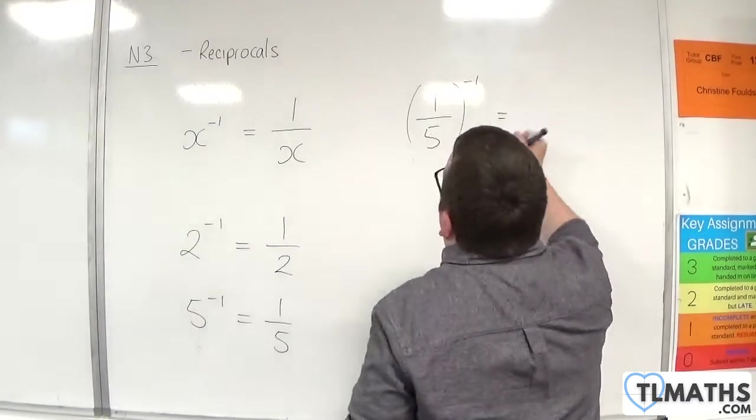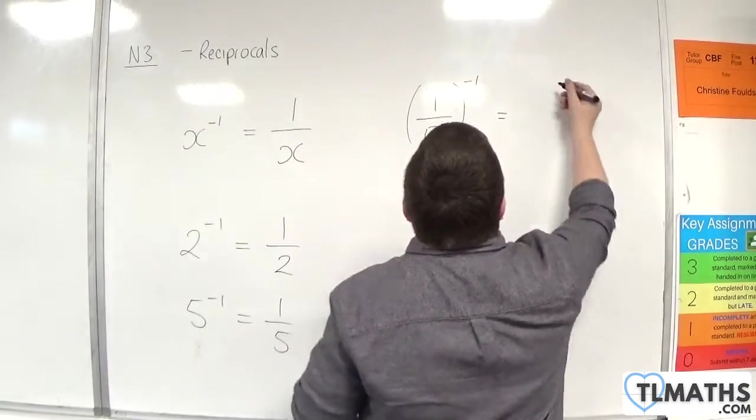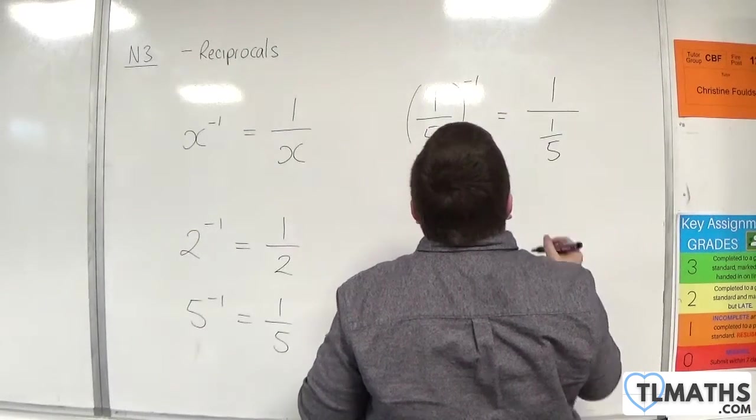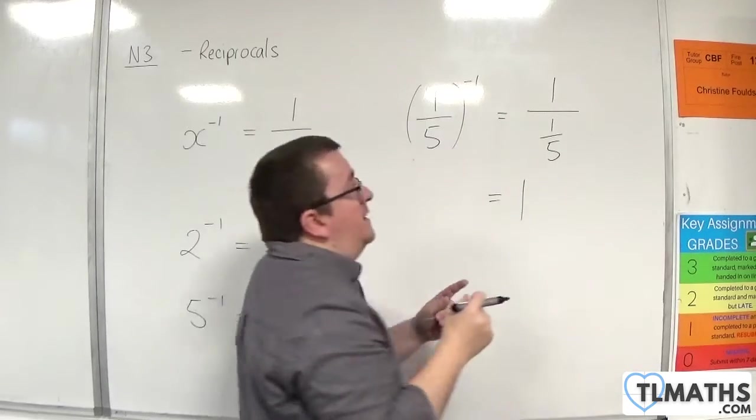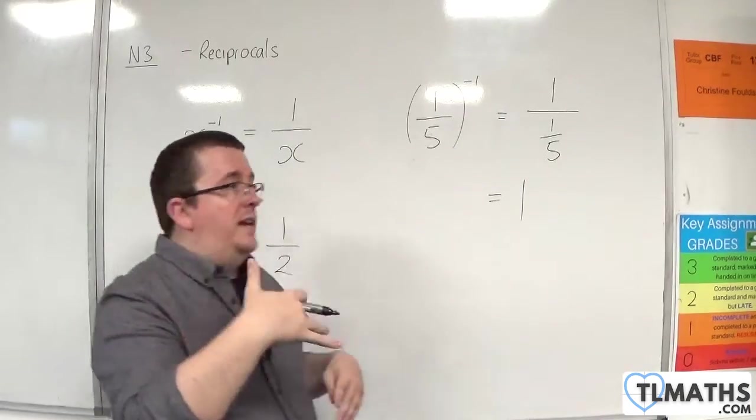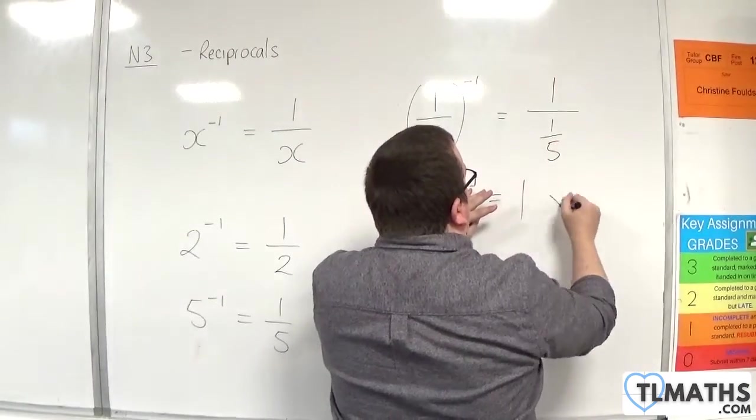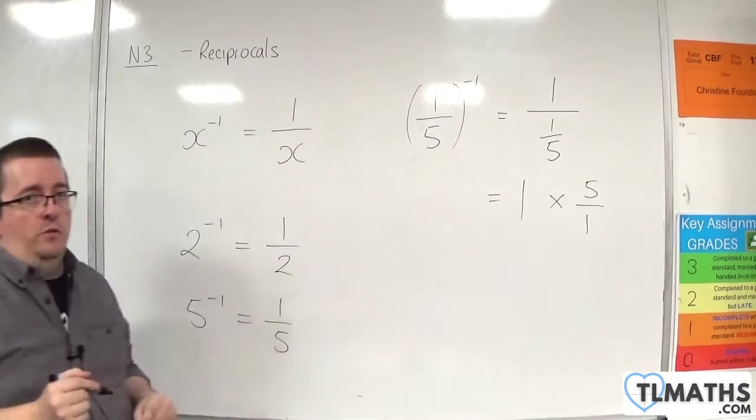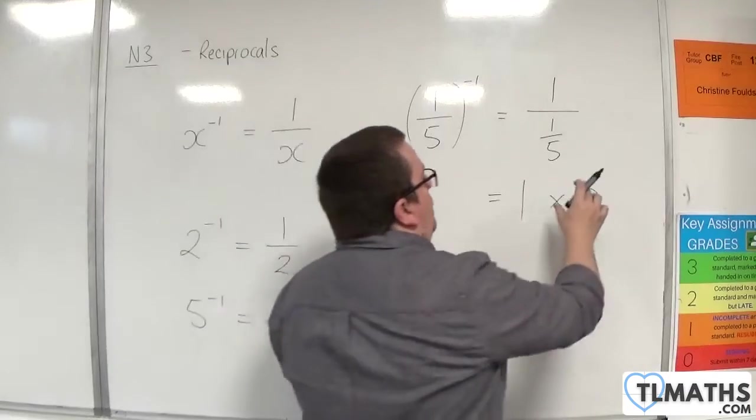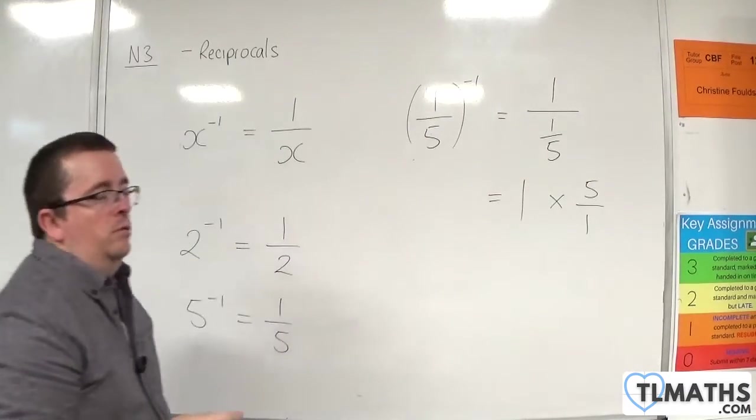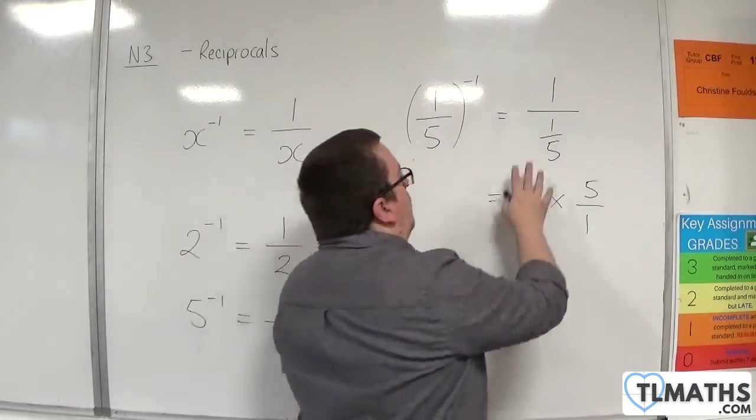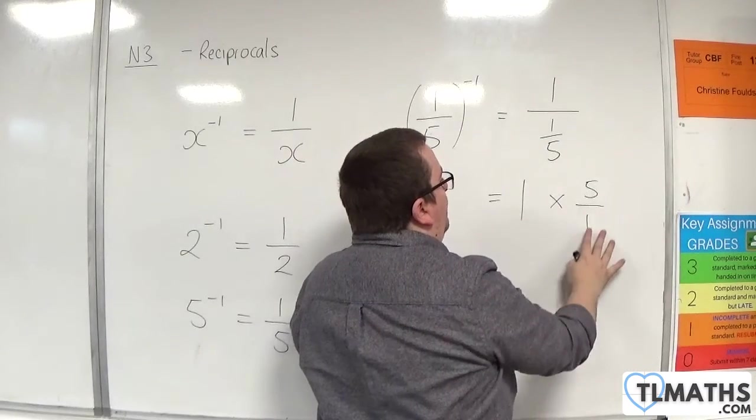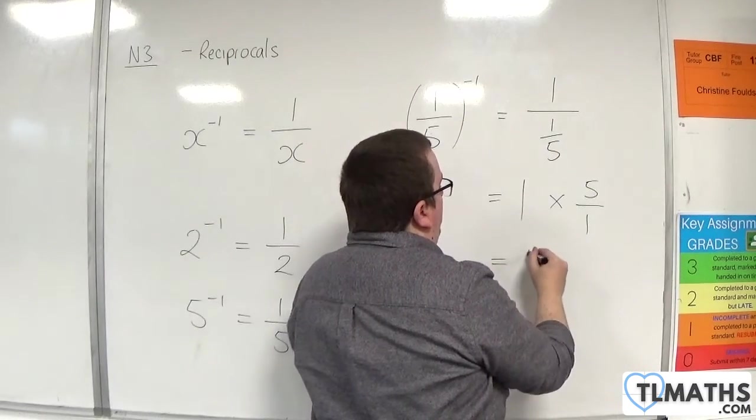What does this mean? Well, this would be 1 over 1 fifth. We know that dividing by 1 fifth is the same as multiplying by the reciprocal. That's where we have used the reciprocal language before. So actually, we've got 1 divided by 1 fifth is the same as 1 times 5 over 1, which is 5.